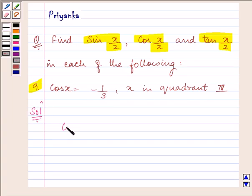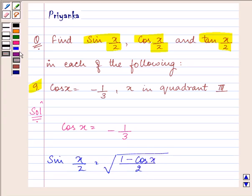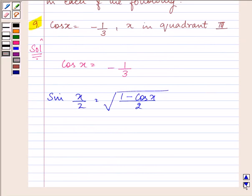The value of cos(x) is equal to -1/3. So we can easily find the value of sin(x/2) as we know that its formula is (1 - cos(x))/2. On substituting its value we have (1 - (-1/3))/2.